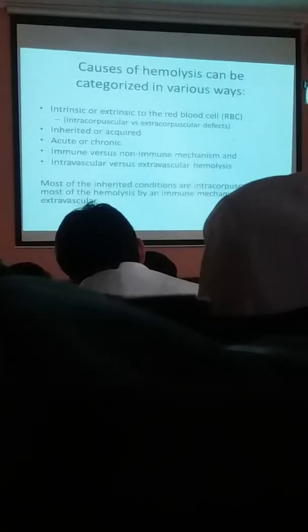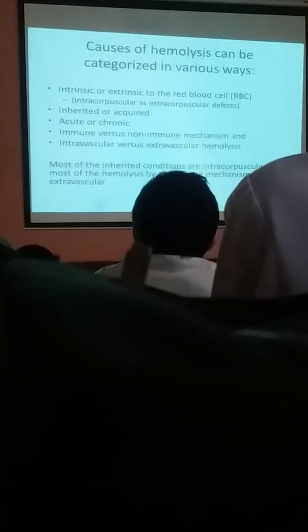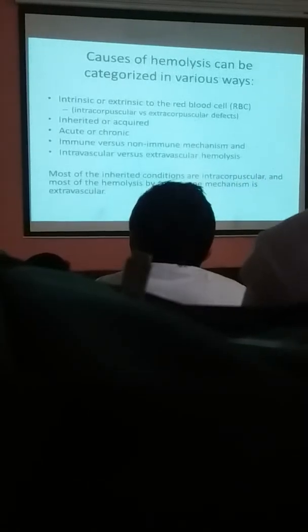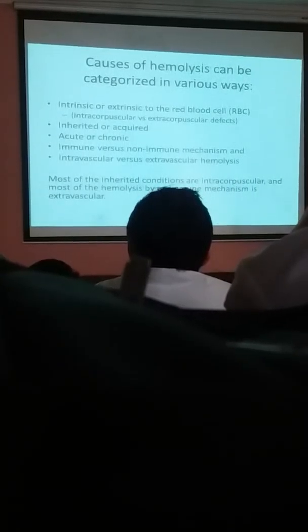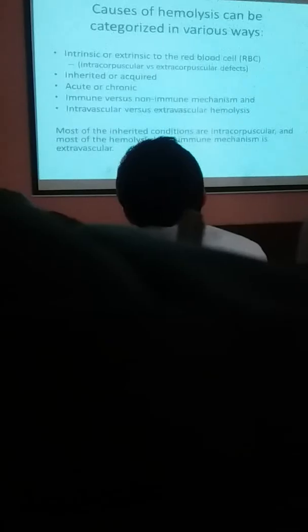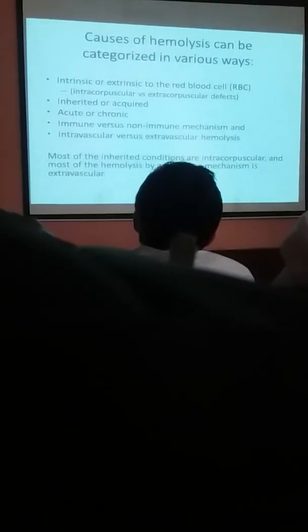So all of these hemolytic anemias have these features in common. Whenever you suspect a patient with anemia presenting with jaundice, increased reticulocyte count, or increased unconjugated bilirubin, all these features indicate increased RBC destruction. Hemolytic anemia can be categorized according to whether the abnormality is intrinsic within the RBC — intracorpuscular — or extrinsic to the RBC — extracorpuscular. Many of these diseases could be inherited, acquired, acute, or chronic, and classified according to the site of RBC lysis: intravascular or extravascular.